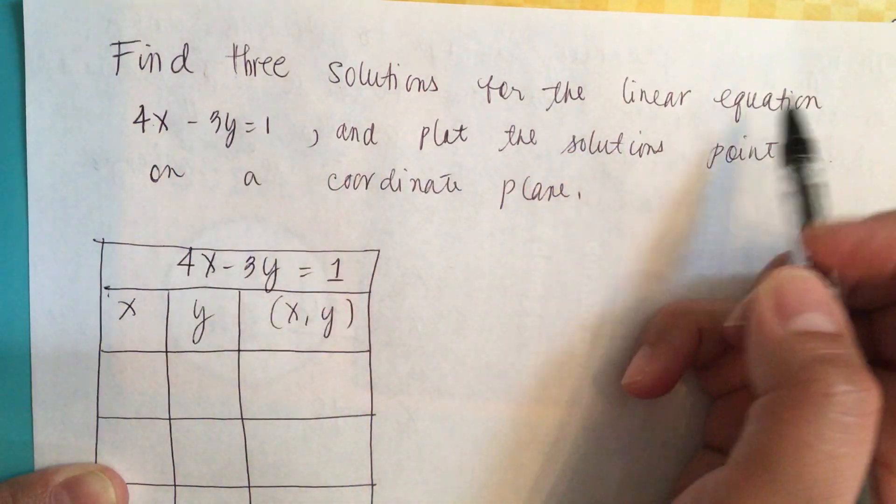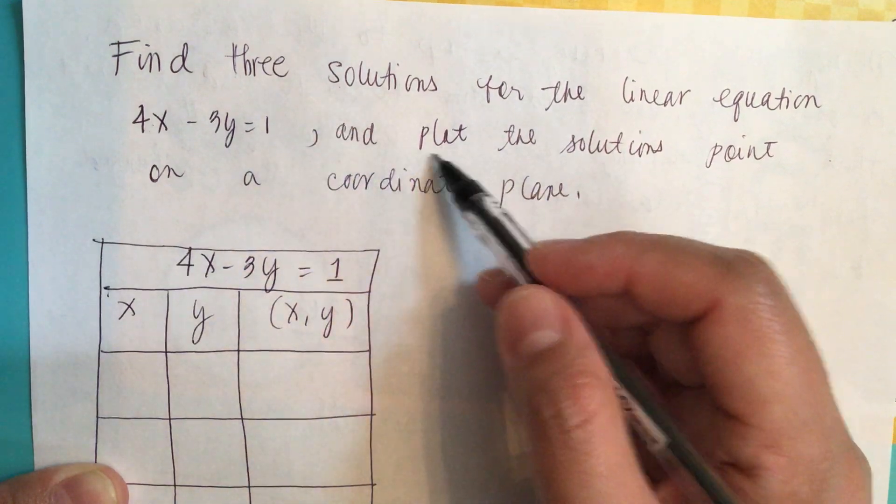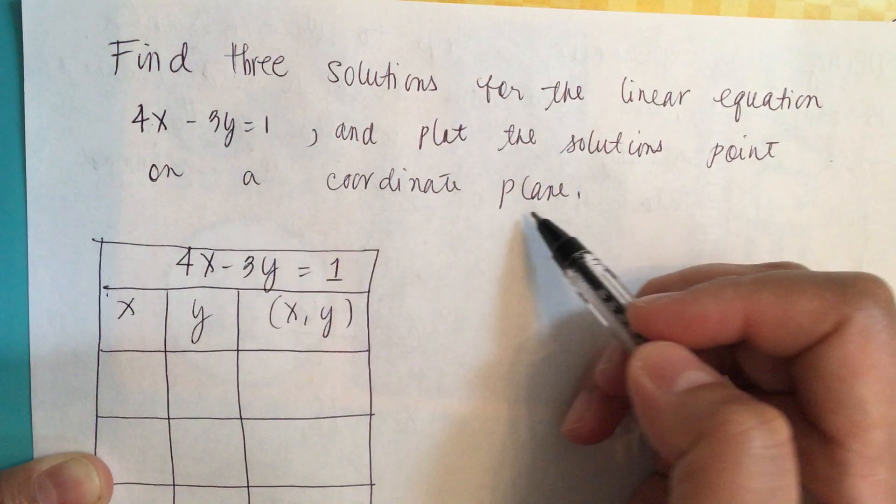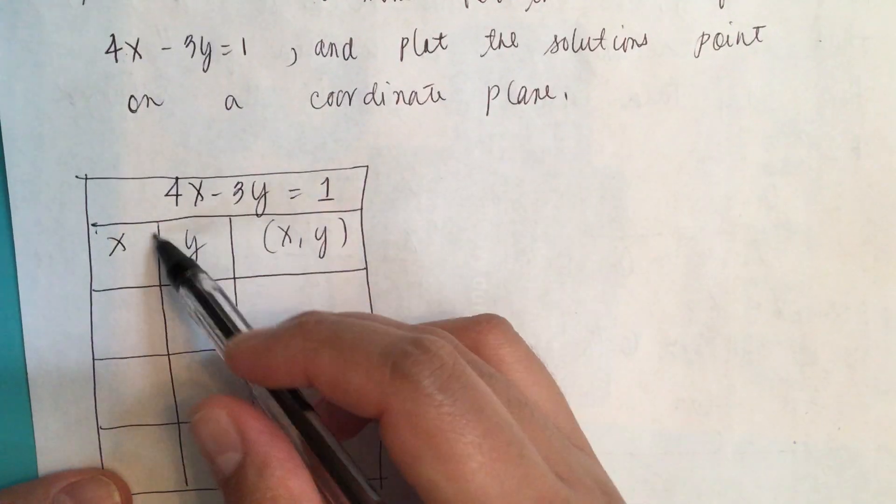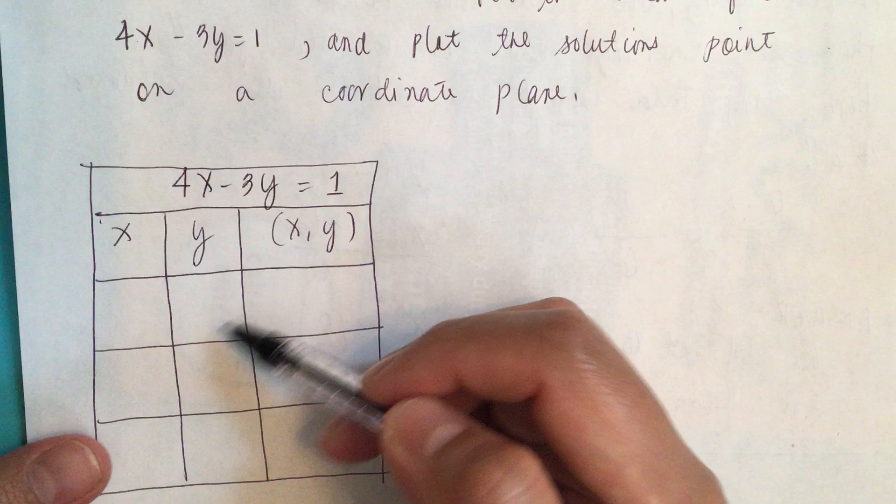Find three solutions for the linear equation 4x minus 3y equals 1 and plot the solution points on a coordinate plane. So we have 4x minus 3y equals 1 and they want us to find three points.